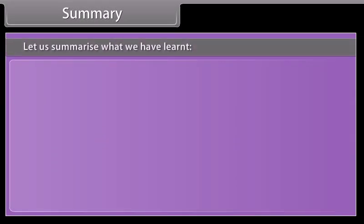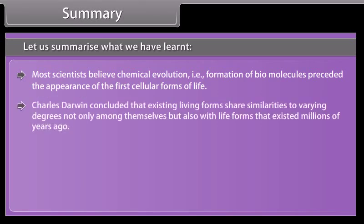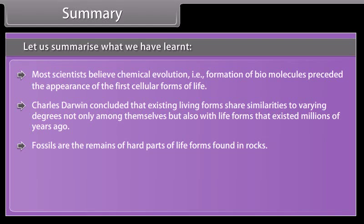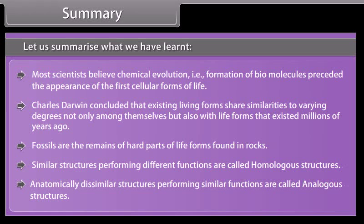Summary: Most scientists believe chemical evolution — that is, the formation of biomolecules — preceded the appearance of the first cellular forms of life. Charles Darwin concluded that existing living forms share similarities to varying degrees, not only among themselves but also with life forms that existed millions of years ago. Fossils are the remains of hard parts of life forms found in rocks. Similar structures performing different functions are called homologous structures, and anatomically dissimilar structures performing similar functions are called analogous structures.